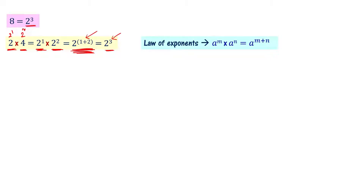The law of exponent states: a power m times a power n can be written as a power m plus n. Here the base is the same. When we have a product with the same base, we keep that base and add the two powers. That is one of the laws of exponents: a power m times a power n equals a power m plus n.